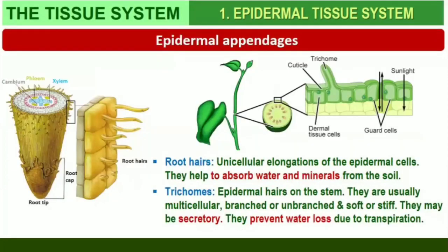The cells of epidermis bear a number of hairs. Root hairs are unicellular elongations of the epidermal cells and help absorb water and minerals from the soil. On the stem, the epidermal hairs are called trichomes. Trichomes in the shoot system are usually multicellular. They may be branched or unbranched, and soft or stiff. They may even be secretory. Trichomes help in preventing water loss due to transpiration.